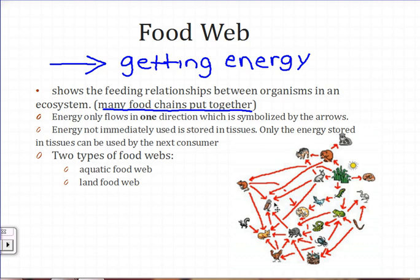There are two types of food webs: aquatic food webs, which involve water, and land food webs. These two food webs can overlap. For example, a bear will eat berries, squirrels, and other small rodents, but it will also eat fish, which are in the aquatic food web. This shows how the food webs can overlap.